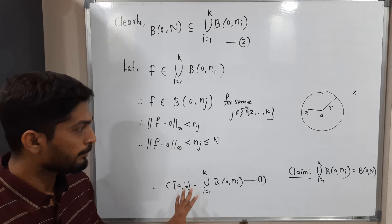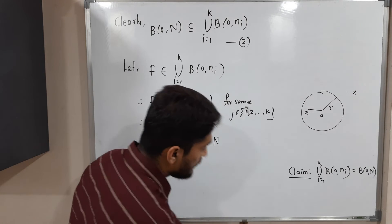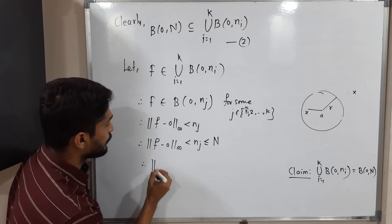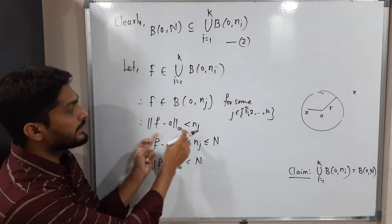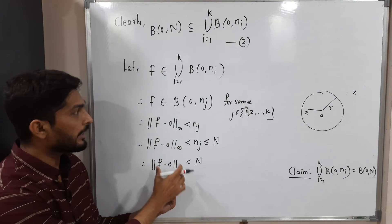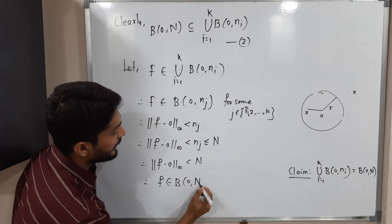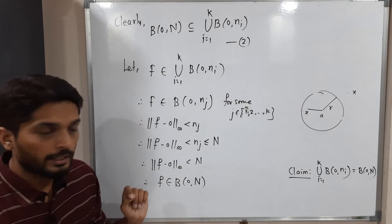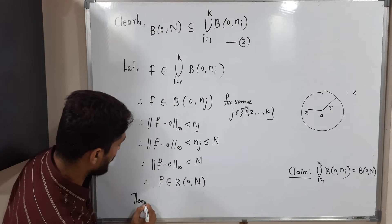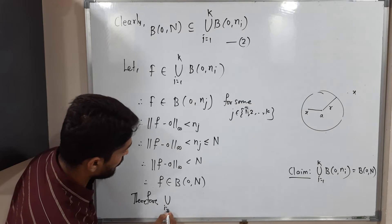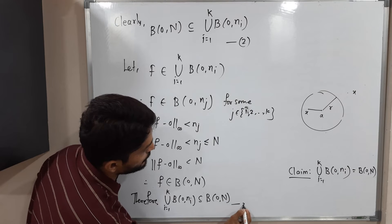By transitivity, ‖F - 0‖_∞ < N. This means F belongs to the ball B(0, N). So we started with F in the union and proved it is in B(0, N). Therefore the union is a subset of B(0, N). Let us call this statement 3.